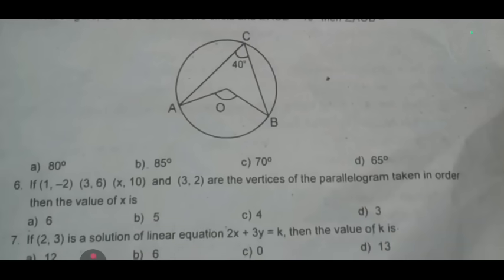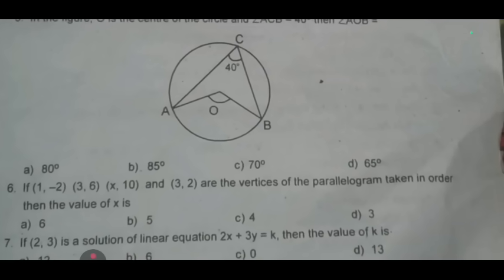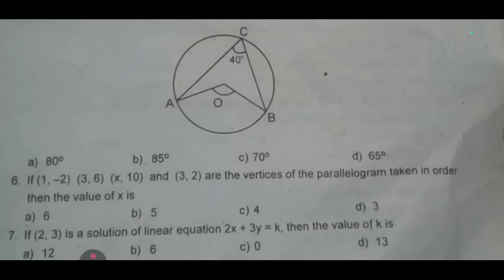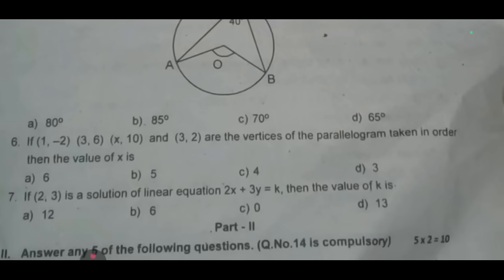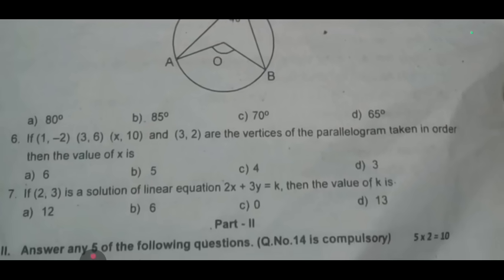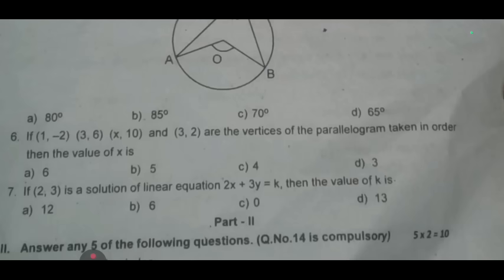Sixth one: if (1, -2), (3, -3), (6, x), (10, 3), (2) are the vertices of the parallelogram taken in order, then the value of x is dash. Seventh one: if (2, 3) is a solution of linear equation 2x plus 3y equal to k, then the value of k is dash. So one mark each.